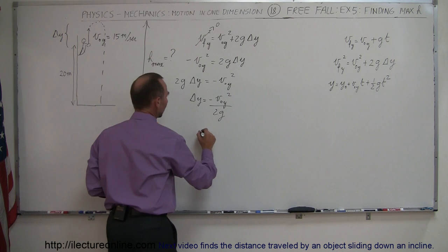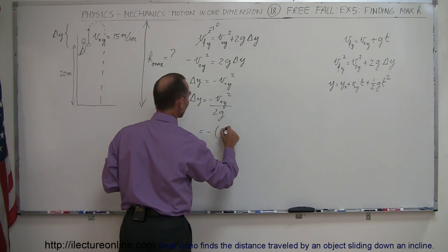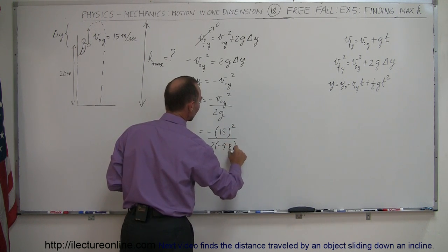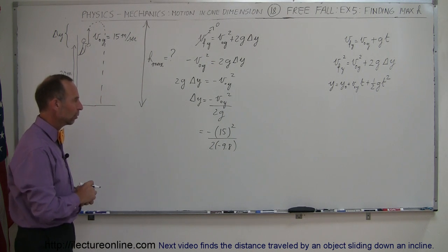So this is equal to a minus, that would be a positive 15 meters per second squared divided by 2G, 2 times a minus 9.8. Notice I'm not putting all the units in so it's a lot cleaner to work with. The answer will be in meters.